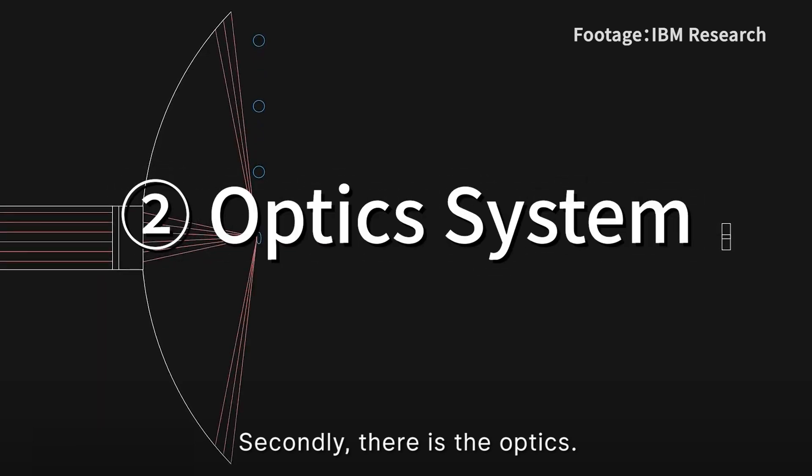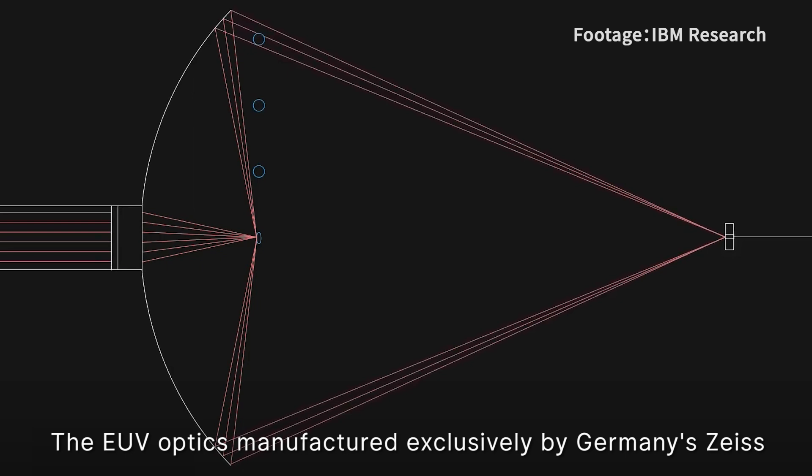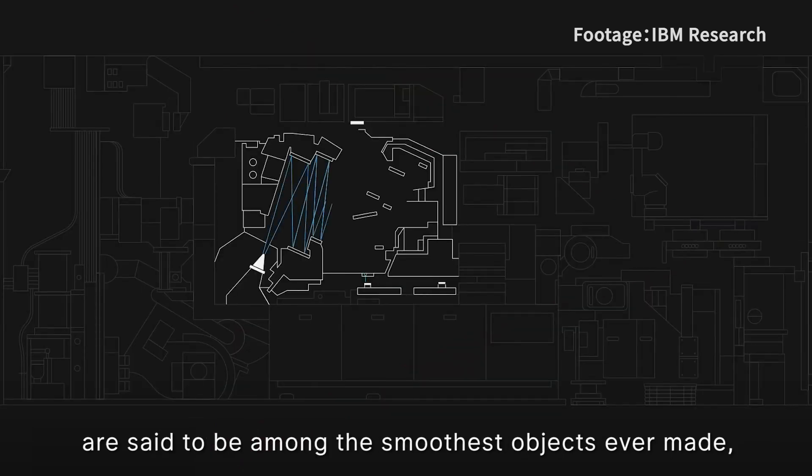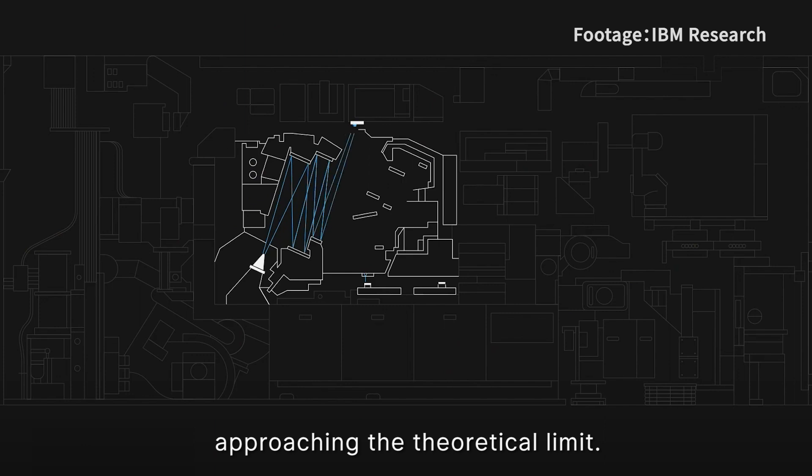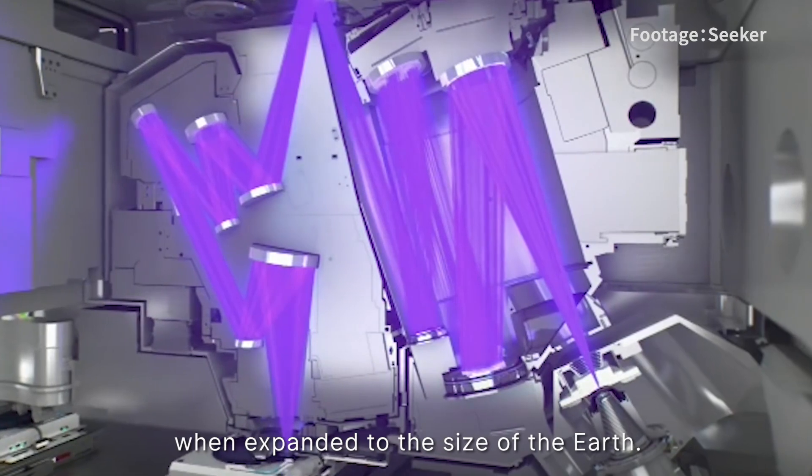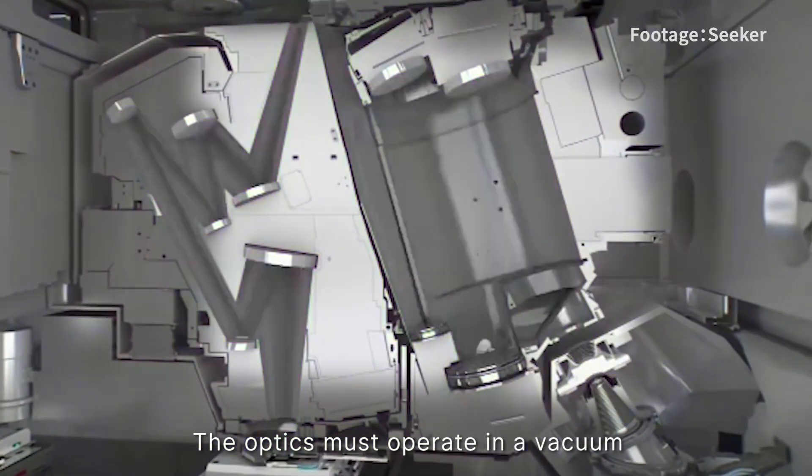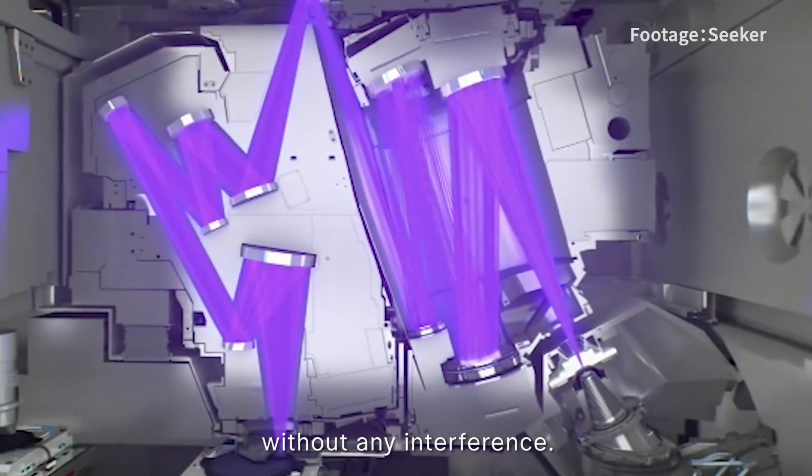Secondly, there is the optics. The EUV optics, manufactured exclusively by Germany's Zeiss, are said to be amongst the smoothest objects ever made, approaching the theoretical limit. The surface roughness is only 0.2 nanometers when expanded to the size of the Earth. The optics must operate in a vacuum without any interference.